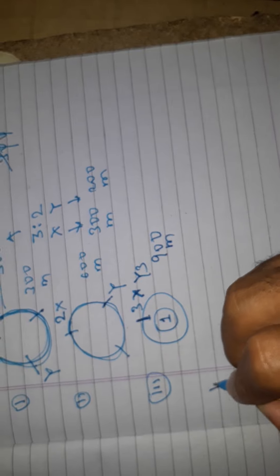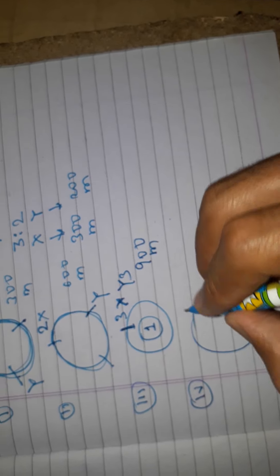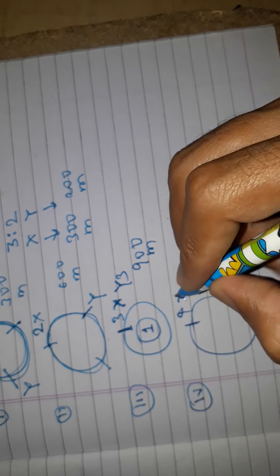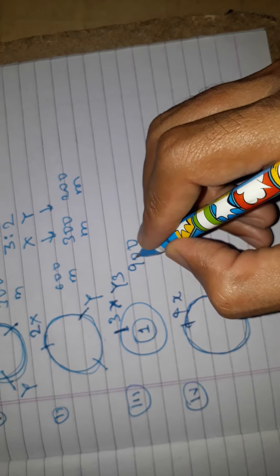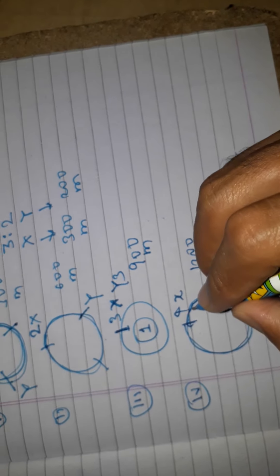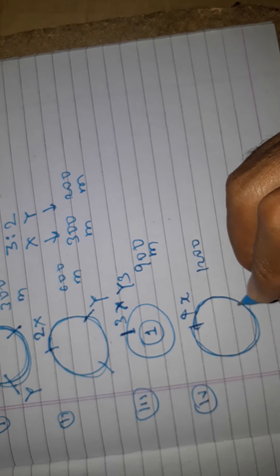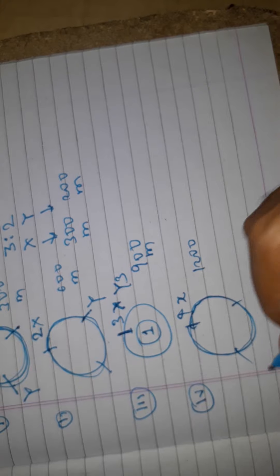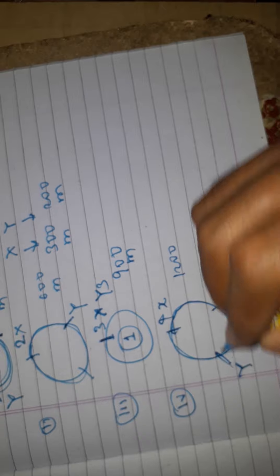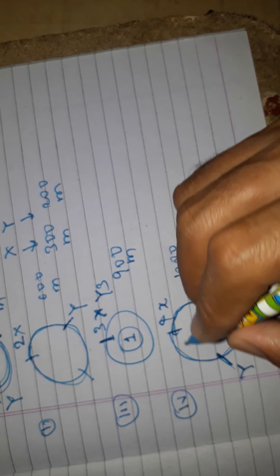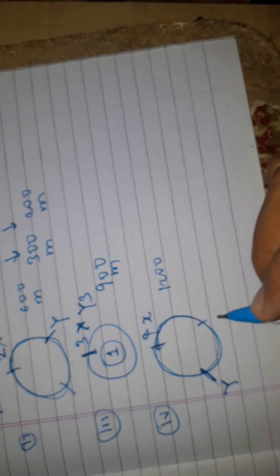We draw the fourth circle. X completes four rounds, covering 900 plus 300 equals 1200 meters total. Y is again at the 200 meter mark within its round. They do not meet in the fourth round.